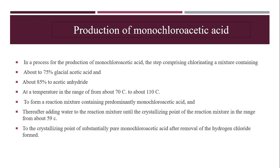In a process for producing monochloroacetic acid, the step comprising a chlorinated mixture contains about 75% glacial acetic acid, acetic anhydride about 85%, and the temperature ranges from about 70 degrees Celsius to about 110 degrees Celsius to form a reaction mixture containing predominantly monochloroacetic acid. After adding water to the reaction mixture until the crystallizing point is from about 59 degrees Celsius, pure monochloroacetic acid is formed after removing the hydrogen chloride.